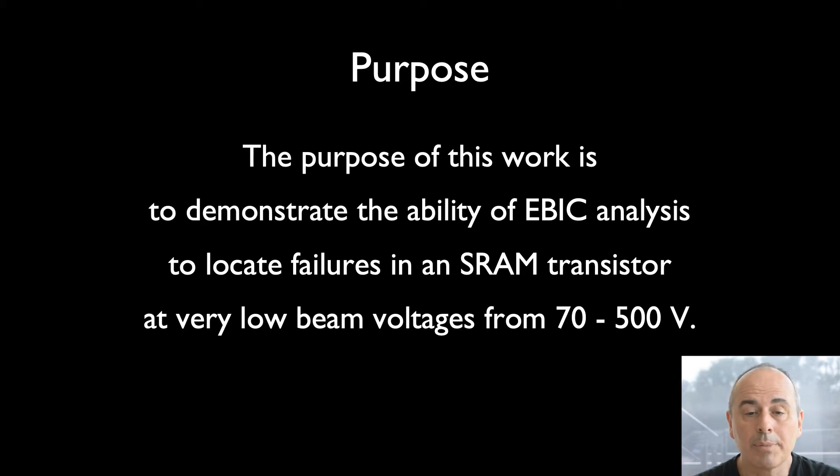The motivation for the work I will be describing was to determine whether electron beam induced current analysis at low beam voltages can be used to locate failures in an SRAM transistor. We started by attempting to record SE and EBIC data from a 7nm device at low acceleration voltages down to 30V. However, it turned out that images of good quality could be taken down to approximately 70V. In principle, lower beam voltages are possible. However, the time to adjust the beam increases and no additional information that was relevant to this investigation was produced.